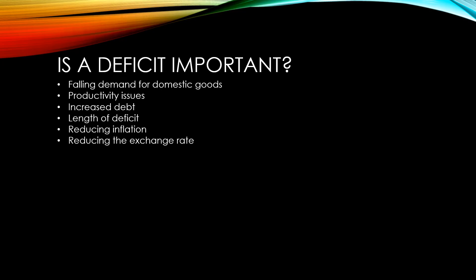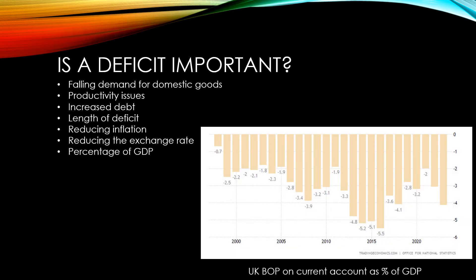Finally, and most importantly for the UK, it's not as important if you have a constant deficit if it's only a small percentage of GDP. This chart here shows that the UK's current account, though constantly in deficit, has been a small percentage of GDP each year.